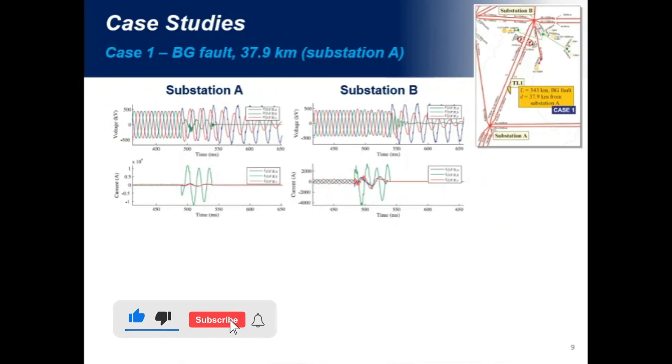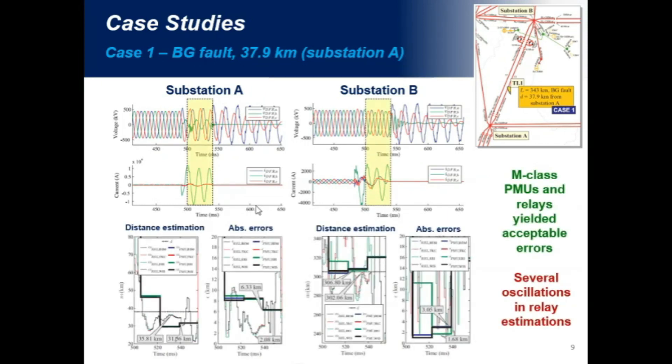In case one, these are the voltage and current waveforms. So, analyzing the fault periods, we apply fault location. Here, this line is the reference line, which represents the actual fault location found by line inspection crews. And we can see here that the fault location from relays and PMU were very close to the real one. And here, we show the absolute errors calculated from substation A. We can see here that the errors did not exceed for PMUs something like six kilometers, approximately. And using relays, it converted to errors of about two kilometers.